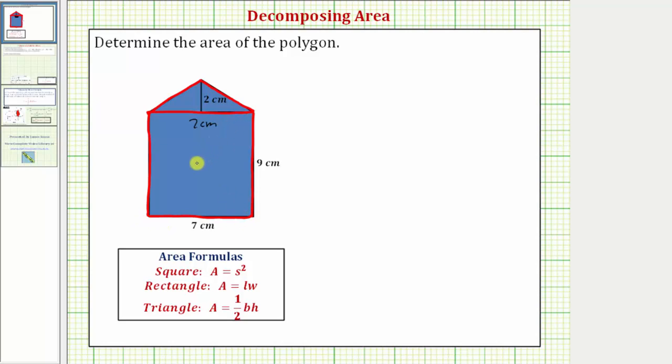So now we'll find the area of the rectangle, the area of the triangle, and then sum the areas to find the area of the polygon.